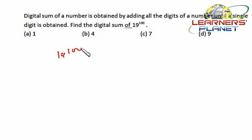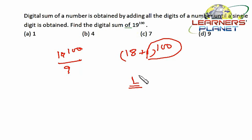19 can be written as 18 plus 1, then raised to 100. And if we divide this expression by 9, each and every term will be a multiple of 9 except 1 raised to 100. Since all the terms will definitely contain 18 except the last term that is 1 raised to 100. Now 1 raised to 100 is 1. So the remainder which we are getting if we divide 19 raised to 100 by 9 is 1, and so is the digital sum of this particular number.